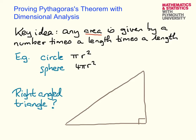Let's look at a couple of examples from geometry. The area of a circle is π r squared — π is a number, and r is a length, squared. For a sphere, 4π r squared is the surface area: 4π is the number, and again we have a length times a length.